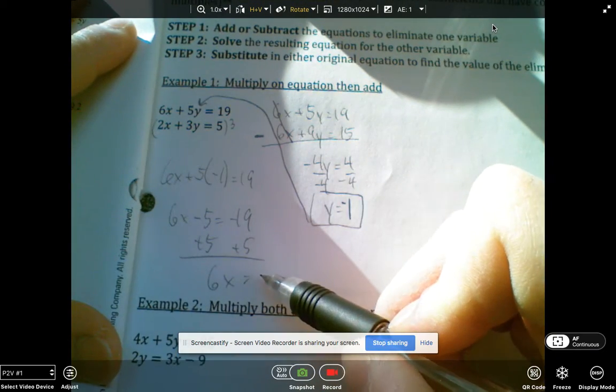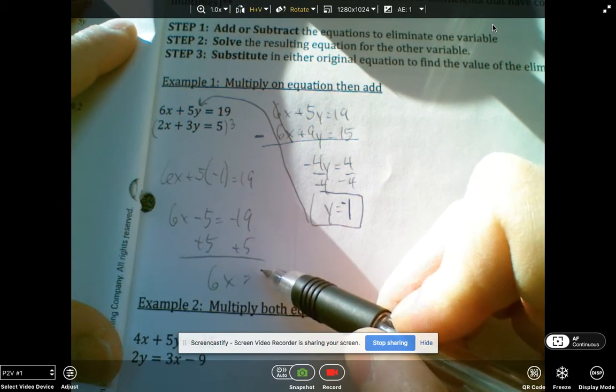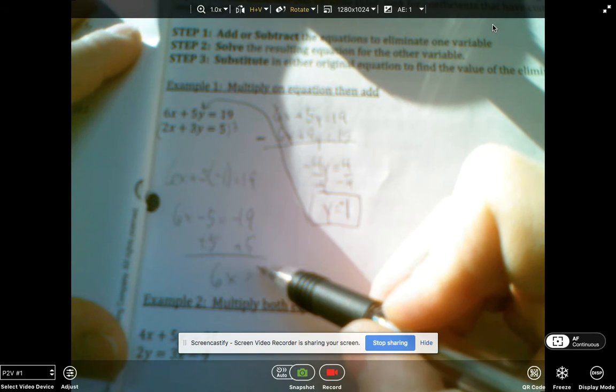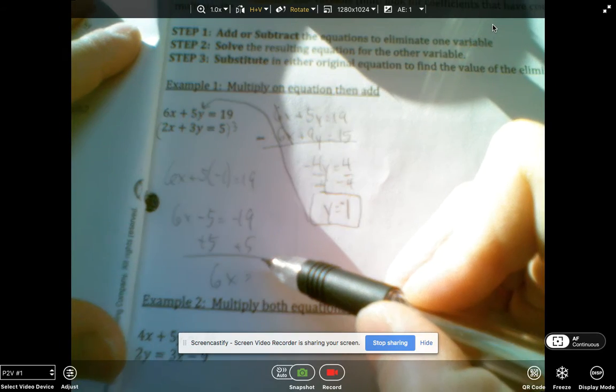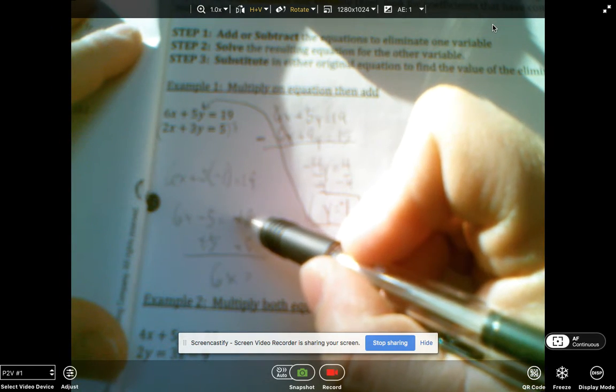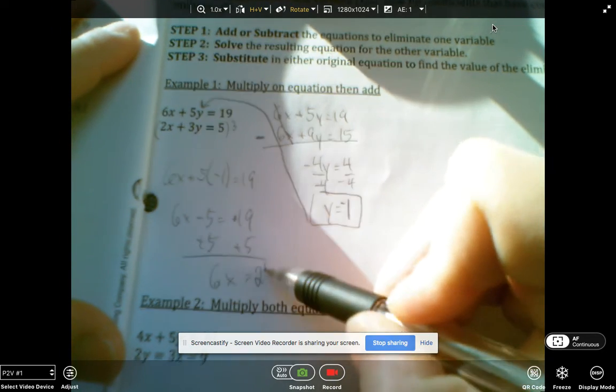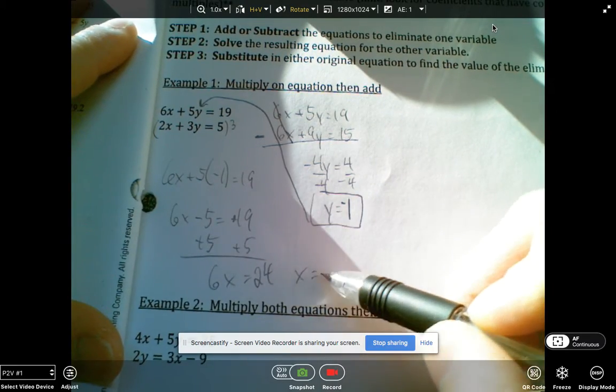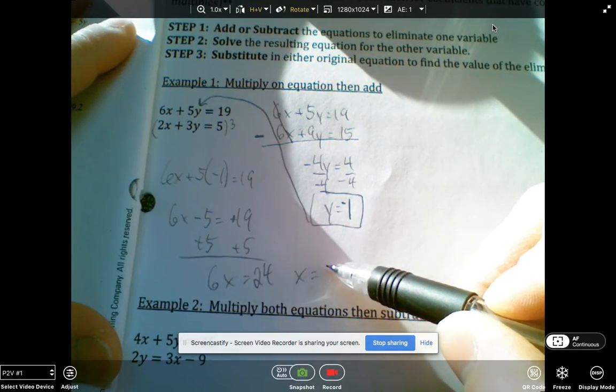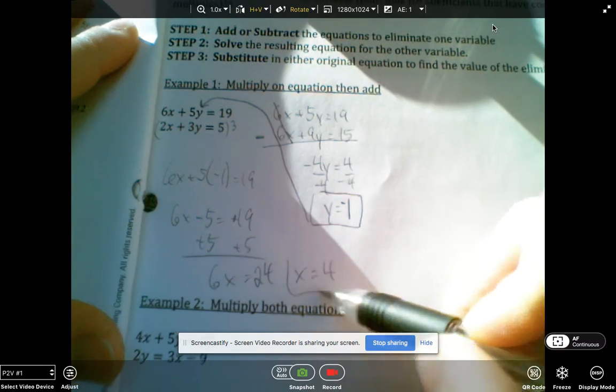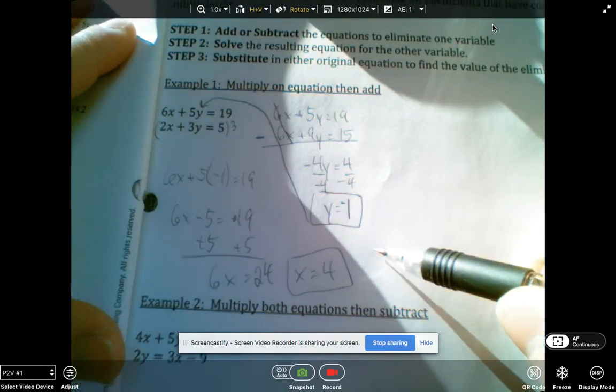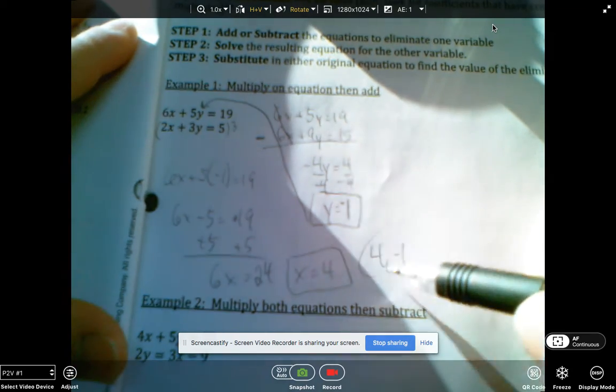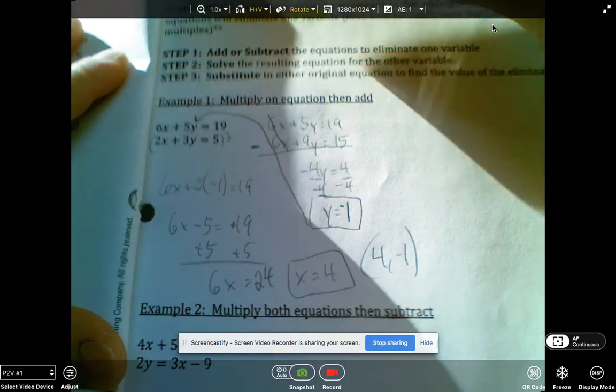6x equals, sorry, I don't know where that negative came from. That's positive 19. That's 24. And so x is equal to 4. So your final solution as a coordinate would be 4, negative 1. All right, let's move on to the next example.